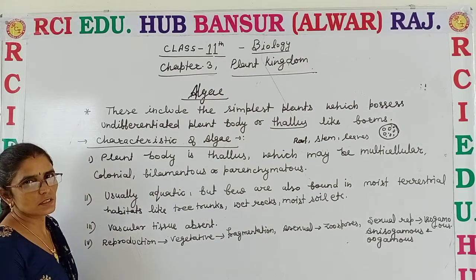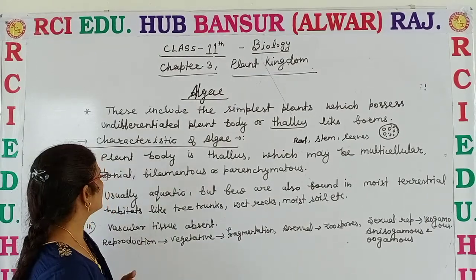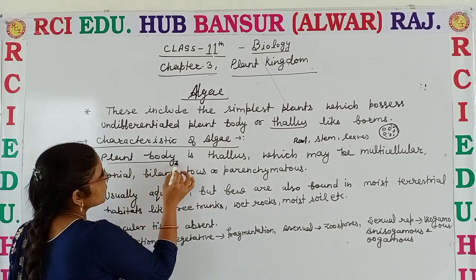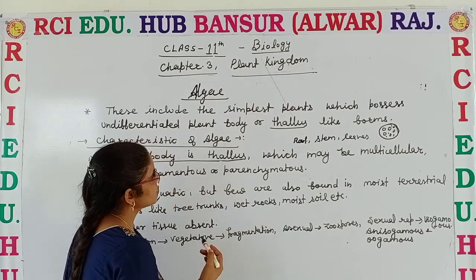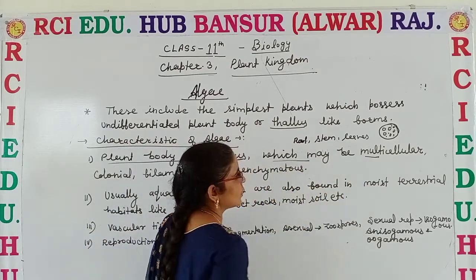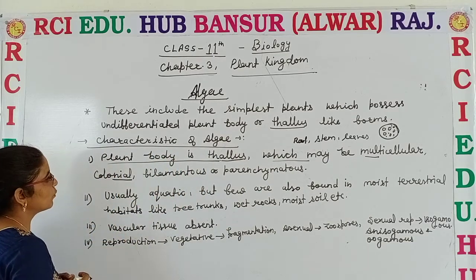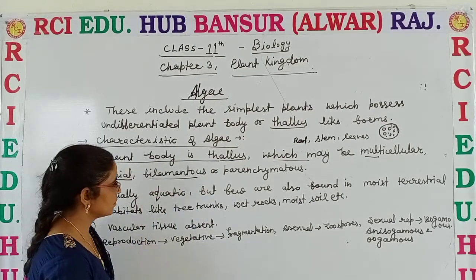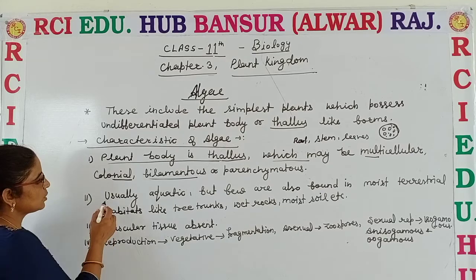Now let me discuss the general characteristics or features of algae. First, the plant body is thallus, which may be multicellular, colonial, filamentous or parenchymatous. It means the plant body is thallus-like and is not differentiated into root, stem and leaves. It may be multicellular, consisting of more than one cell; colonial, like Volvox; or filamentous — filament-like structures — for example Spirogyra.